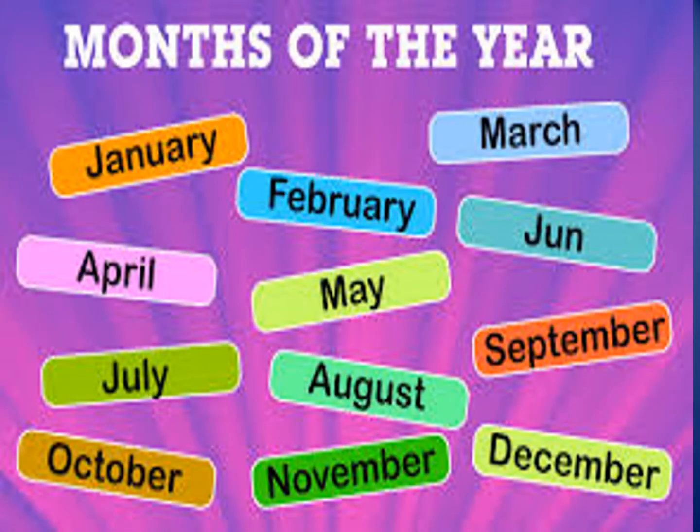The names of the months are January, February, March, April, May, June, July, August, September, October, November, and December. These are the 12 months of the year.